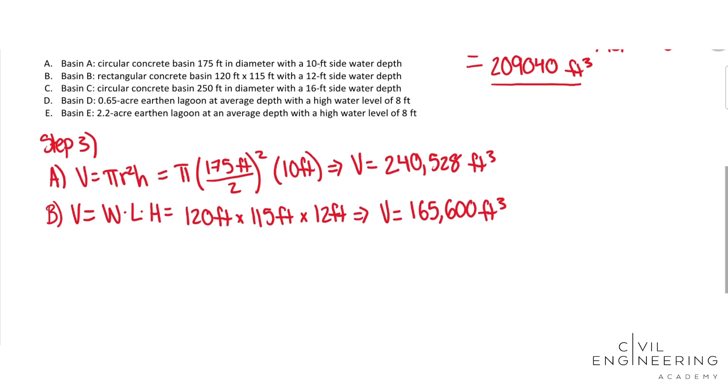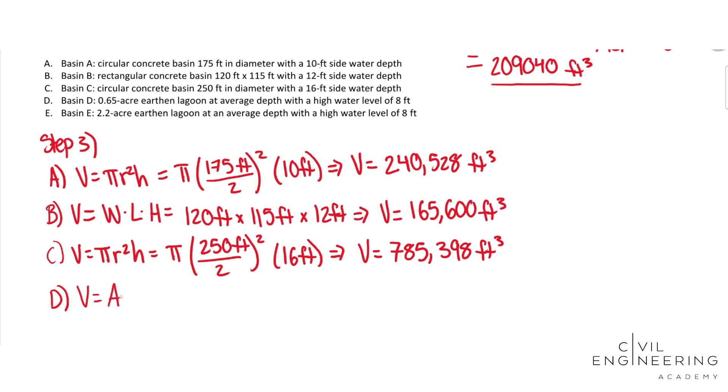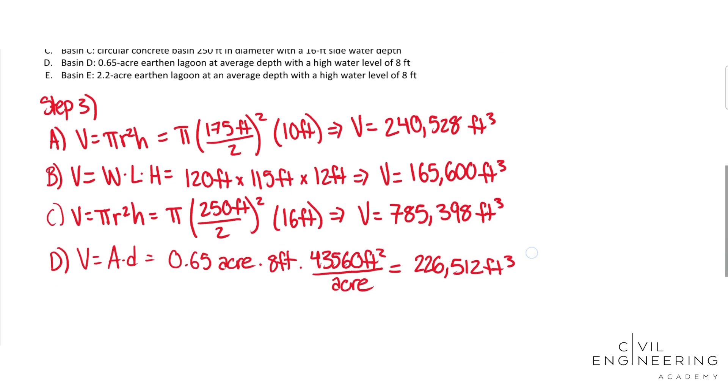I'll just skip over the calculation for C because that's the same type of calculation for A. And then moving on to D, we have a lagoon that gives us an area and a depth. So we'll do volume equals area times depth equals 0.65 acres times 8 feet depth. Then we need to convert that acres to feet squared, which is 43,560 feet squared per acre. And that will give us 226,512 feet cubed. You can get this conversion from your conversion charts in the PE Reference Handbook section 1.2.